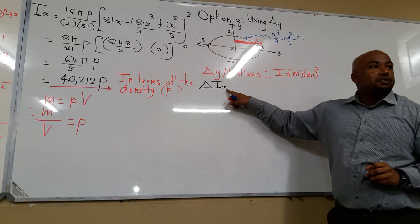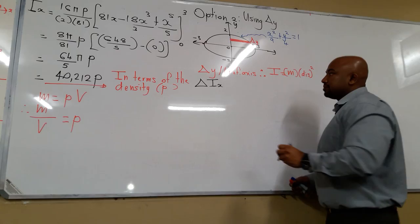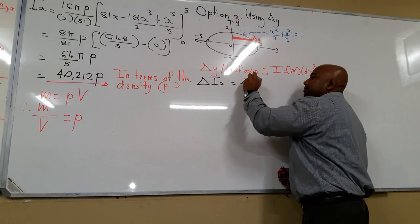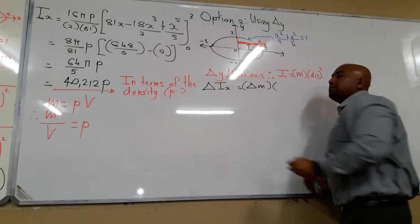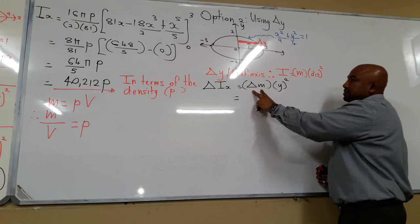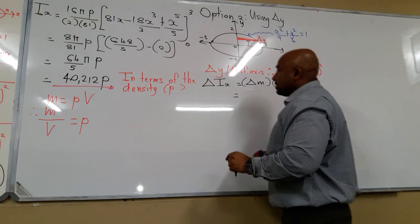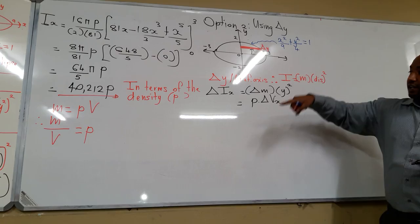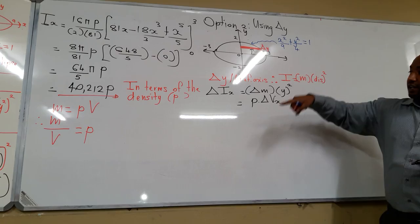Since delta y is parallel to the reference axis, we use the formula Ix equals mass times the distance squared, where the distance is measured from the reference axis. The reference axis is the x-axis, so the distance from the x-axis is y, giving delta Ix equals delta m times y squared.